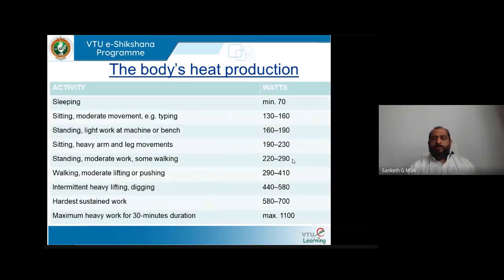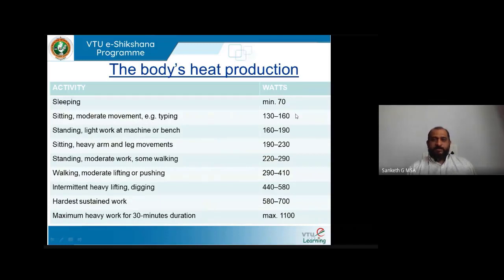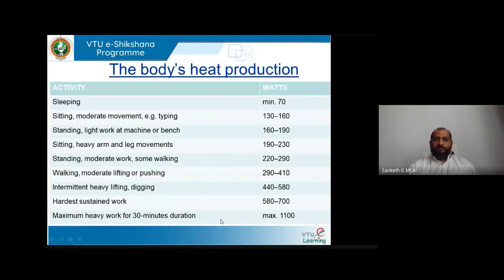During different activities, the human body produces varying amounts of heat. During sleeping it produces a minimum of 70 watts of energy. During sitting or moderate work it produces around 130 to 160 watts. With slightly heavy work such as walking or moderate lifting or pushing, it generates 290 to 410 watts. The more intense the activity, the more energy and heat is produced — this energy is the product of metabolism, which is an exothermic reaction also producing glucose required for those activities.